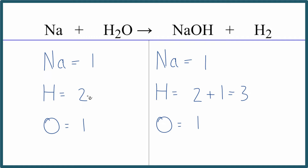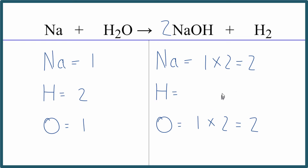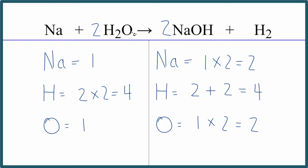We have a three and a two — normally when we have an odd number we want to make it even. If I put a coefficient of two in front of NaOH, I get two sodium atoms, two oxygen atoms, and now four hydrogen atoms. Then putting a coefficient of two in front of H₂O gives me two times two equals four hydrogens — balanced. The oxygens are one times two, giving two — balanced. Sodium is one times two giving two — balanced. The equation is done.